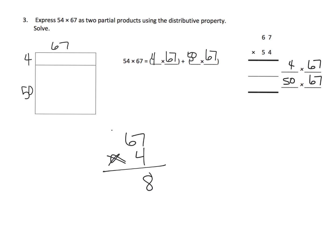And that's 28, carry the 2, 24, 26. So 268 goes right here. And now we're going to multiply the 50 times 67. And I like to do 67 times 5 tens. So that's going to be, 5 times 7 is 35. And then 5 times 6 is 30, plus 3 is 33. So that's 335, but it's really 335 tens. So I need to add a 0, because that makes it 3,350. So that goes right here, 3,350.